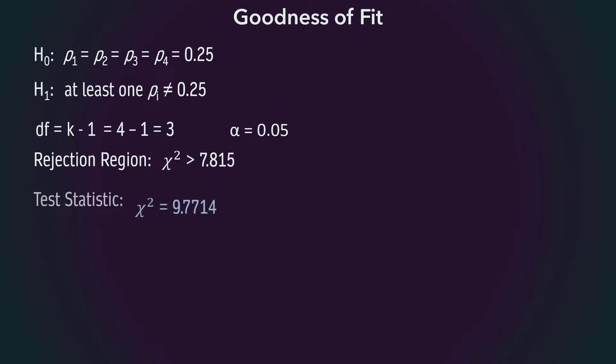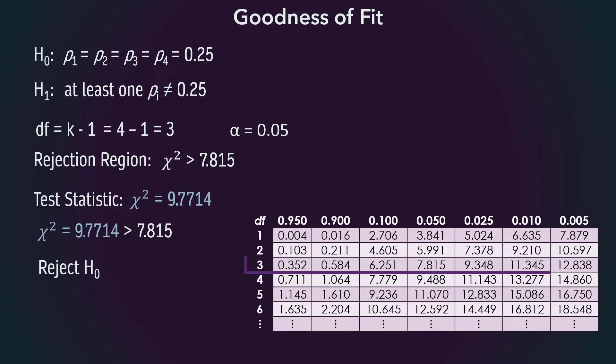Since this statistic is greater than the critical value, we reject the null hypothesis. From the chi-square table for df equals 3, we also see that the test statistic falls between the critical values for alpha equals 0.025 and alpha equals 0.01, indicating that the p-value is less than 0.05.